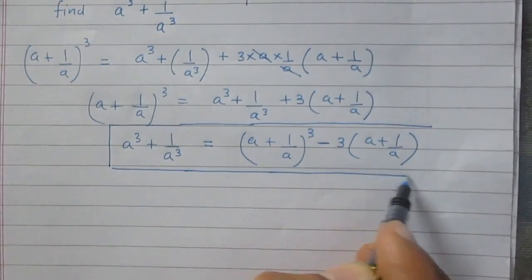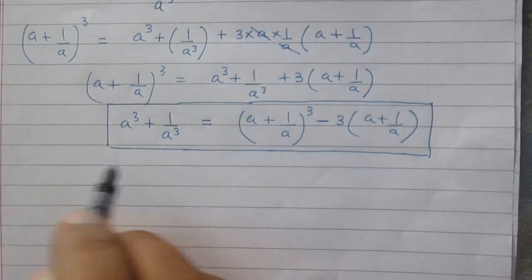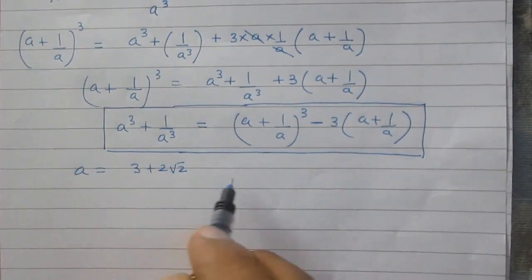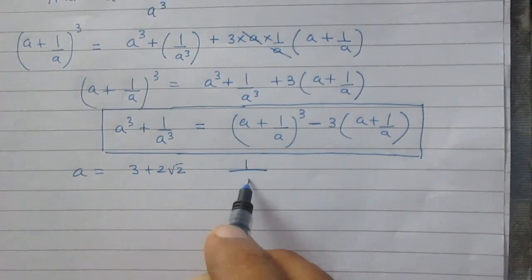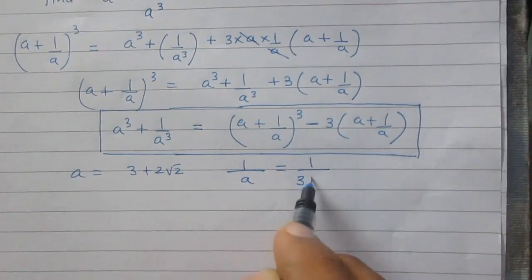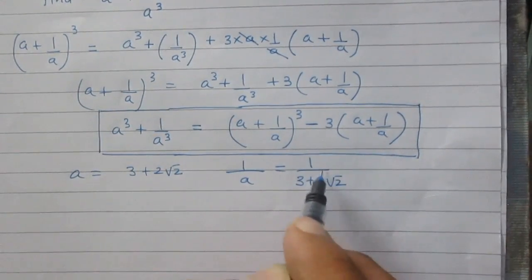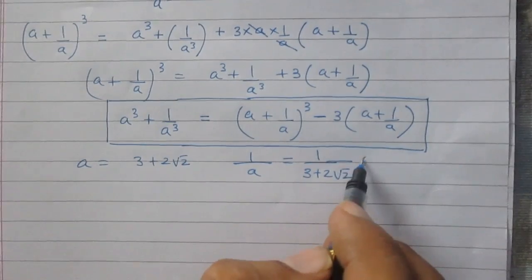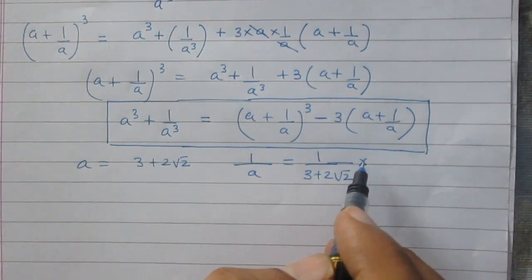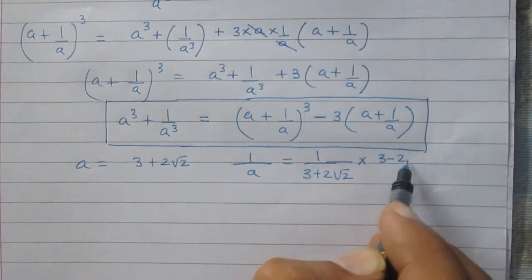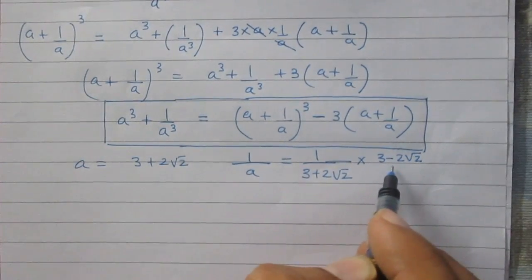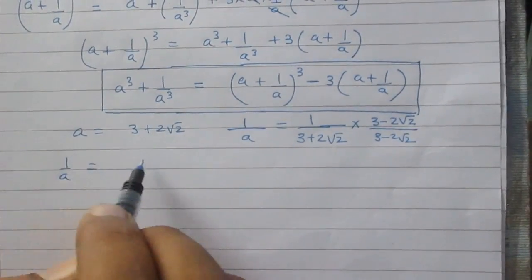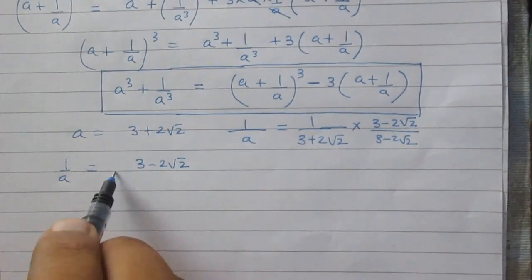If we come to know the value of a and 1 by a, the value of a is 3 plus twice of square root 2, as given. So let us consider 1 upon a: it is 1 upon 3 plus twice of square root 2. It is a fraction with irrational denominator, so we will rationalize it by multiplying its numerator and denominator both by 3 minus twice of square root 2. Doing so, we will get 3 minus twice of square root 2 in the numerator.